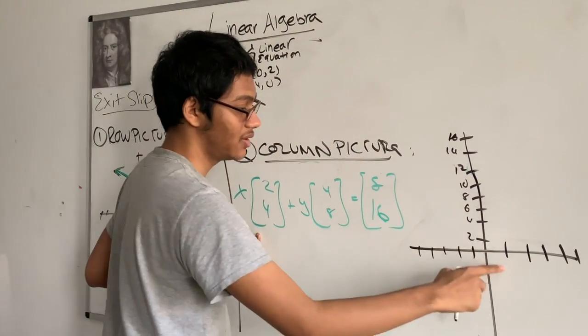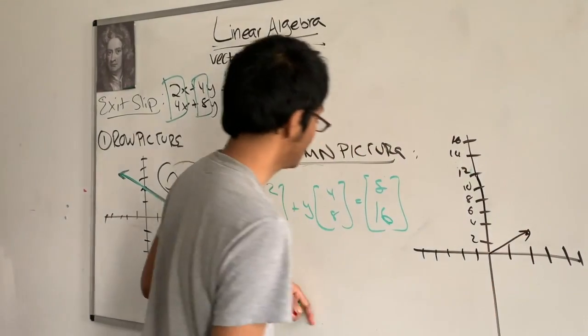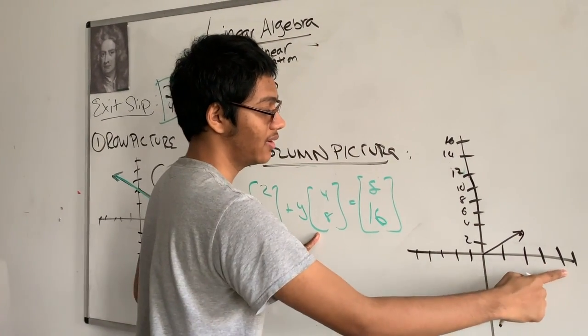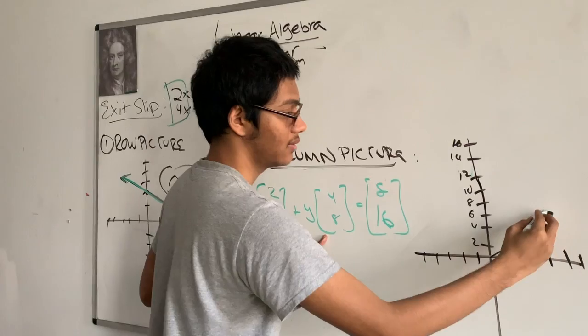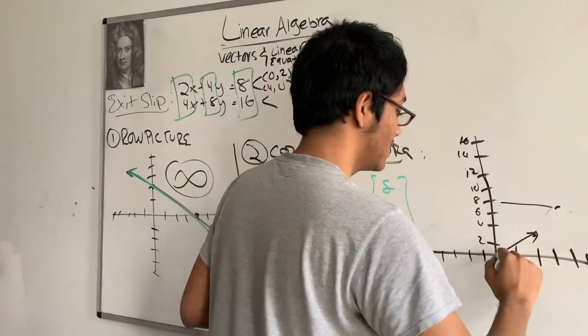So my first vector is going to be 2, 4. So that's 2, 4. Second one is 4, 8. So you see, I have 1, 2, 3, 4, and I go 8. So this is my second vector.